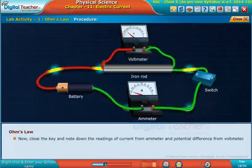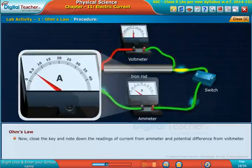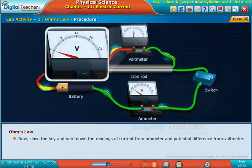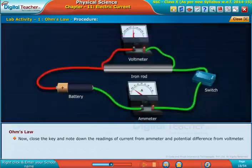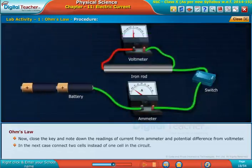Now close the key and note down the readings of current from ammeter and potential difference from voltmeter. In the next case, connect two cells instead of one cell in the circuit.